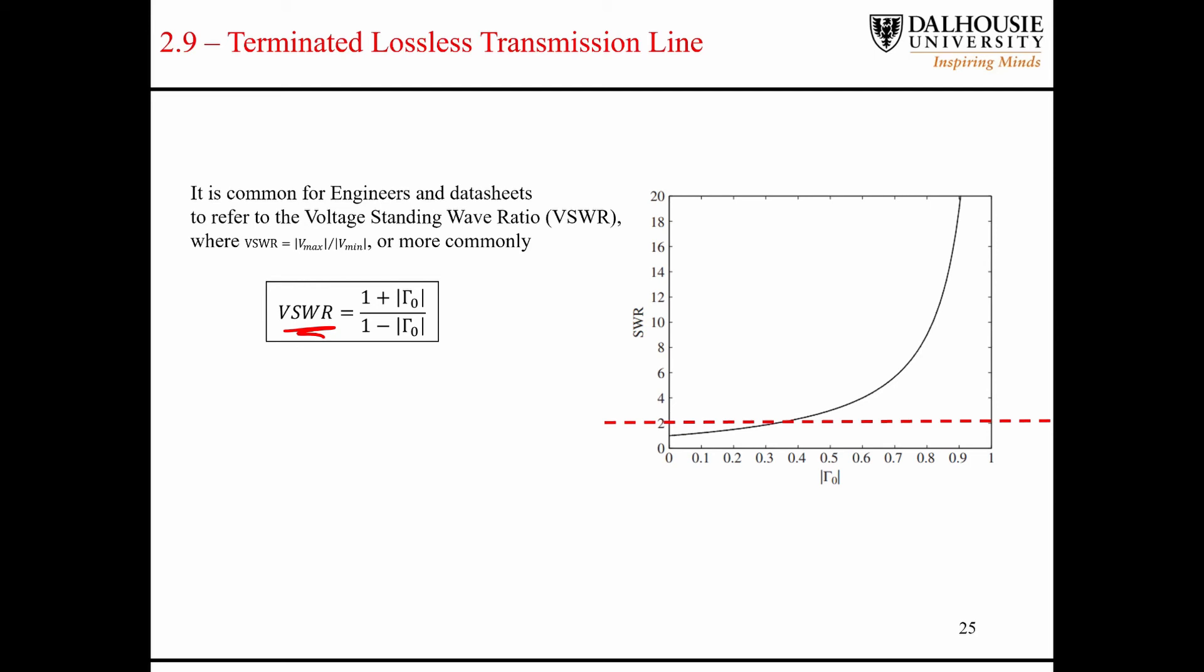We can see here that kind of best case if the reflection coefficient is zero, then the VSWR equals one. So you can see here, I guess this is the VSWR curve as a function of the reflection coefficient. Best case, it asymptotically approaches one.